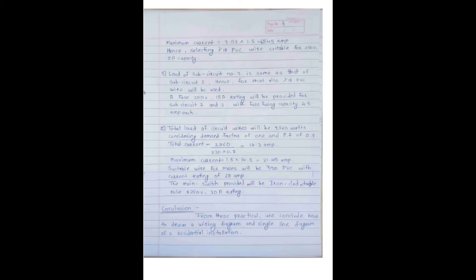This is the wiring diagram. From this practical we conclude how to draw a wiring diagram and single line diagram of a residential installation. This is the second practical. The aim is to draw the symbols of installation components and a floor plan showing their location.